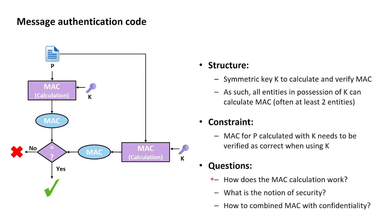The questions we now have left to answer are: how does a MAC calculation really work? What is the notion of security associated with message authentication codes? And how could message authentication codes — primitives serving the purpose of providing authenticity — possibly be combined with primitives serving the purpose of confidentiality, so that the plaintext doesn't need to be sent in clear to our receiving party?